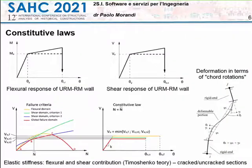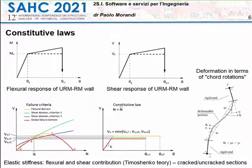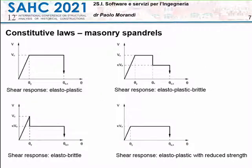Different constitutive laws can be considered — in general, elastoplastic with hardening, considering both the flexural and shear response, up to the ultimate limit in terms of deformation, usually expressed as drift. The possible failure criteria implemented include flexural and different shear strength criteria, the minimum of which characterizes the non-linear response. Elastic stiffness takes into account both flexural and shear contribution based on Timoshenko theory, for both cracked and uncracked sections. Different constitutive laws can be used in the program.